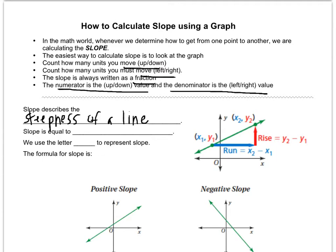So that's an idea of what slope really describes. Slope is equal to rise over run. It's a fraction. And we use the letter M to represent slope.